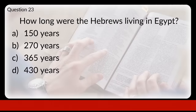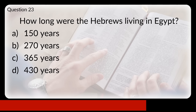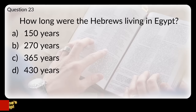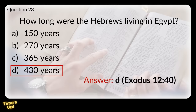Question twenty-three: how long were the Hebrews living in Egypt? Was it 150 years, 270 years, 365 years, or 430 years? The answer is D, 430 years.